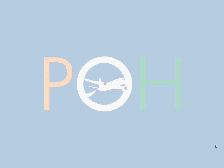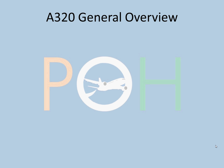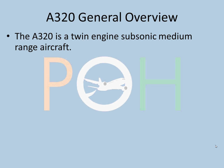This video is going to deal with the general overview of the aircraft. The A320 is a family — the Airbus A320 family — which has four types of aircraft: the 318, 319, 320, and 321. The A320 is a twin-engine subsonic medium-range aircraft. It's a twin-engine, it doesn't cross Mach 1, and it has a medium range.